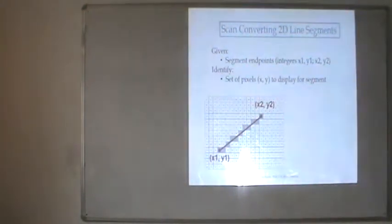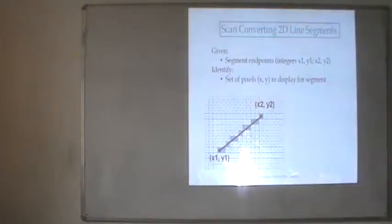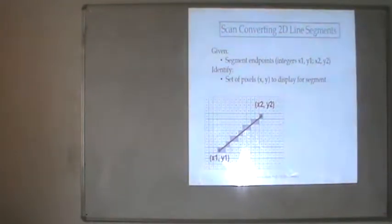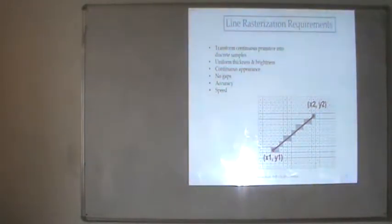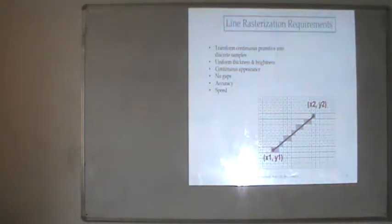In a diagram with starting point x1, y1 and ending point x2, y2 — integer values — we use the pseudo-function setpixel(x, y). All the pixel regions are filled and we get a straight line. The line rasterization requirements include: we want a straight line with no gaps, correct accuracy, speed, brightness, thickness, and continuity. We should not have uneven lines — just as if drawing with a scale and pencil, the same kind of line should appear on the monitor.